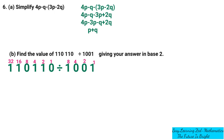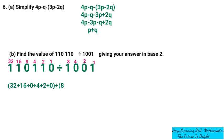We multiply each digit by its place value and add the products to convert to base 10. For the dividend: 32×1=32, plus 16×1=16, plus 8×0=0, plus 4×1=4, plus 2×1=2, plus 1×0=0. For the divisor: 8×1=8, plus 4×0=0, plus 2×0=0, plus 1×1=1.